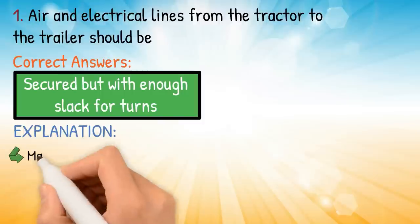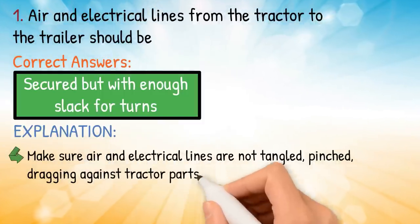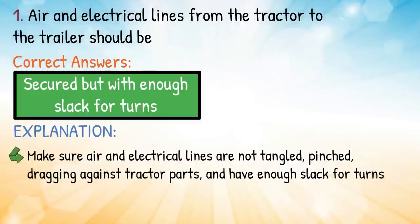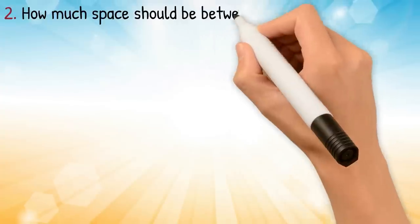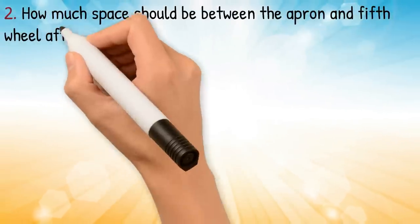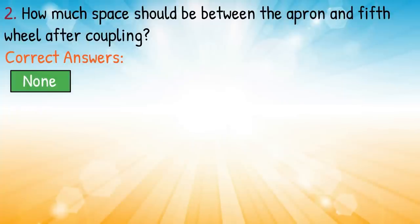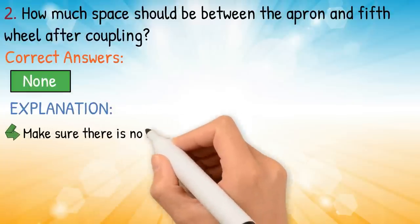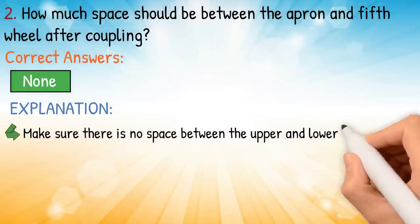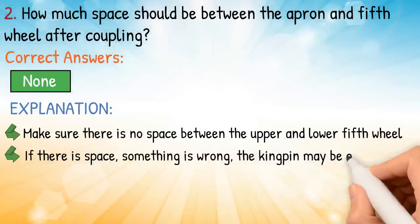Explanation: make sure air and electrical lines are not tangled, pinched, or dragging against tractor parts, and have enough slack for turns. Question two: how much space should be between the apron and fifth wheel after coupling? Correct answer: none. Explanation: make sure there is no space between the upper and lower fifth wheel. If there is space, something is wrong.